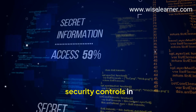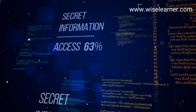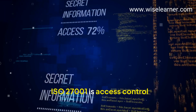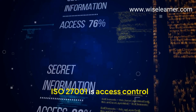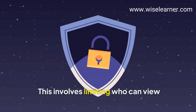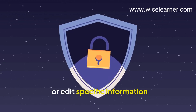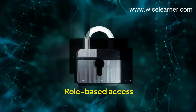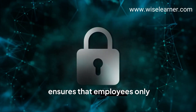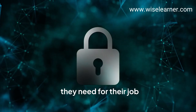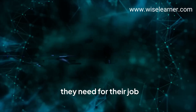One of the core security controls in ISO 27001 is access control. This involves limiting who can view or edit specific information. Role-based access ensures that employees only have access to the data they need for their job.